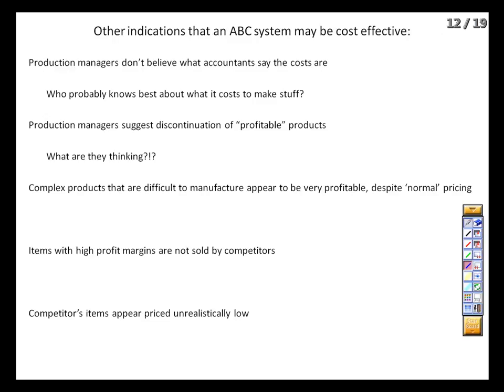Say we've got a product that's very complicated to produce — it's got multiple steps and is perhaps assembled in a couple different locations. And yet when we price it the same way we price our other products, we seem to be making a killing on it. That sort of situation shouldn't pass the sniff test. It would be one thing if we knew we were charging a substantial premium for the product, but if we're not and yet are still recognizing lots of gross profit, it's entirely possible we're just missing something.